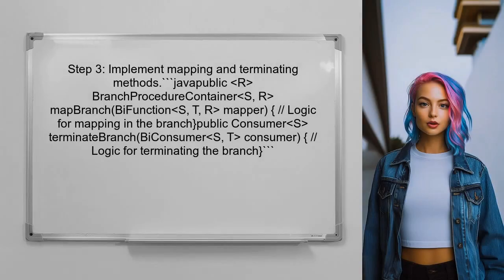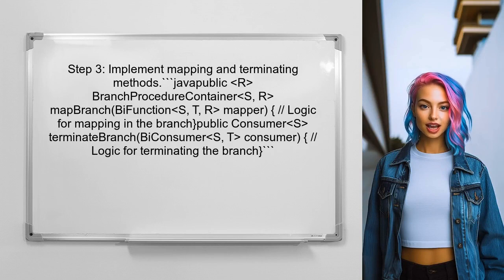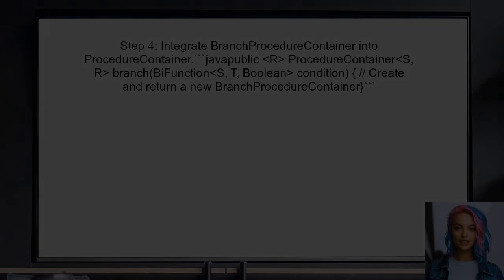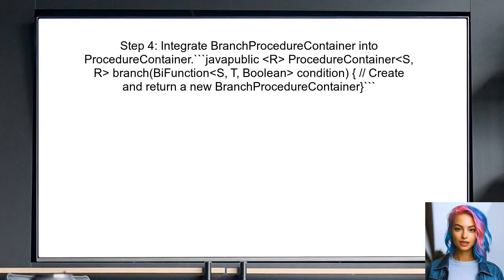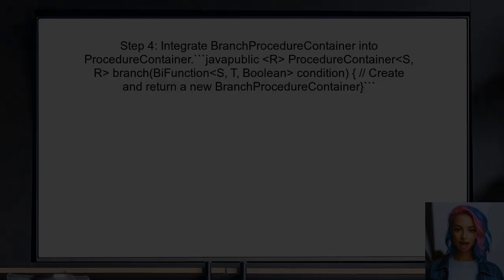In the BranchProcedureContainer, the user should implement methods for mapping and terminating each branch. This will allow the user to specify what happens in each case. Finally, the user should modify the original procedure container to integrate the new BranchProcedureContainer. This will allow the user to seamlessly switch between branches based on the condition.